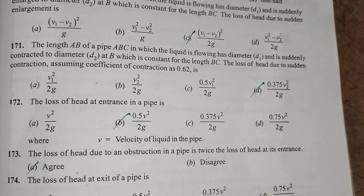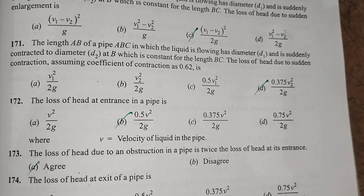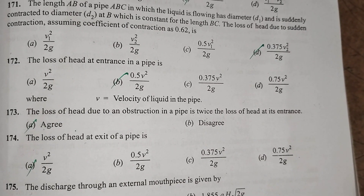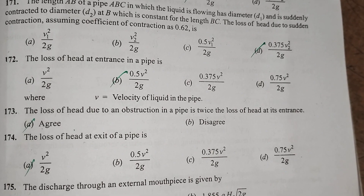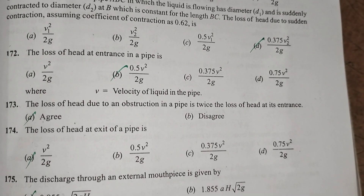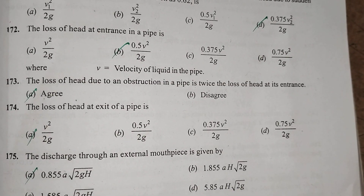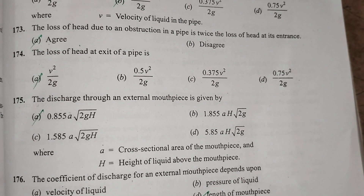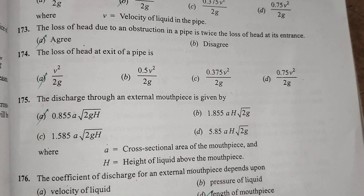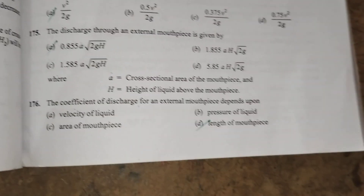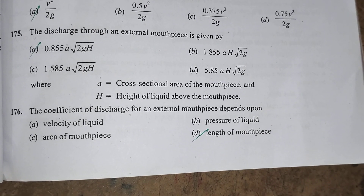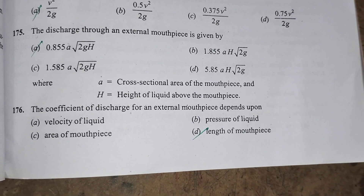The loss of head at entrance in a pipe is 0.5·V²/2g. The loss of head due to an obstruction in a pipe is twice the loss of head at entrance — Agree. The loss of head at exit in a pipe is V²/2g. The discharge through an external mouthpiece is 0.855·a·√(2gH). The coefficient of discharge of an external mouthpiece depends upon the length of the mouthpiece.